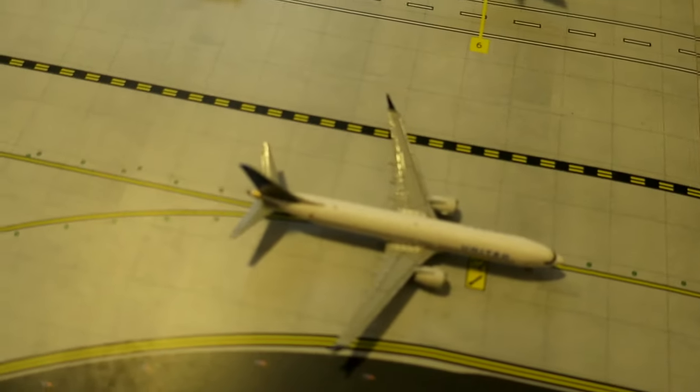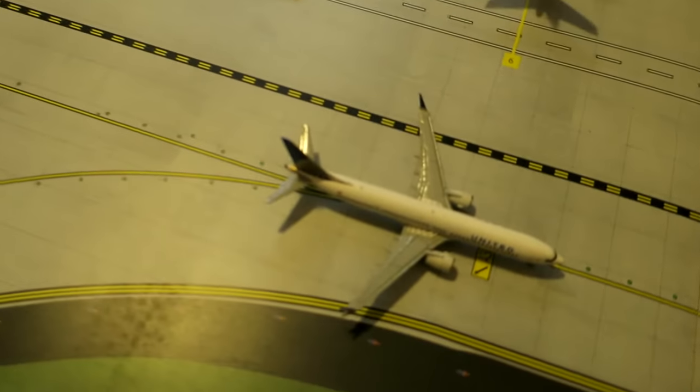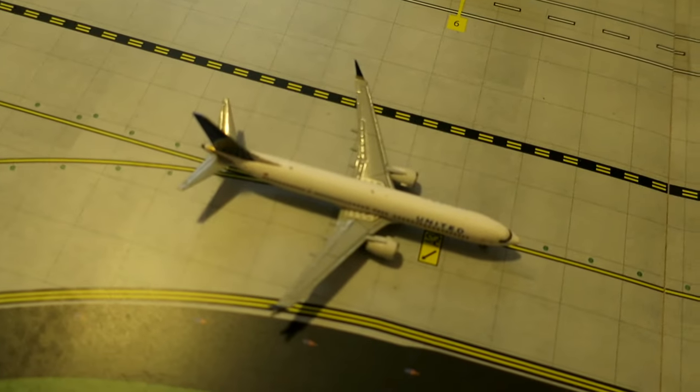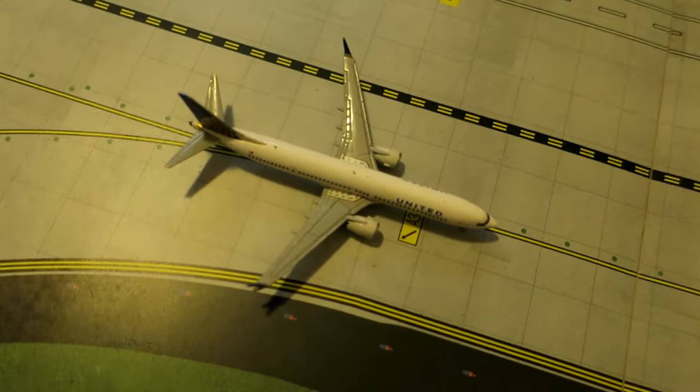Right here we've got United Boeing 777-800... sorry, 737 MAX 9. It had arrived from Honolulu and will depart to Chicago.